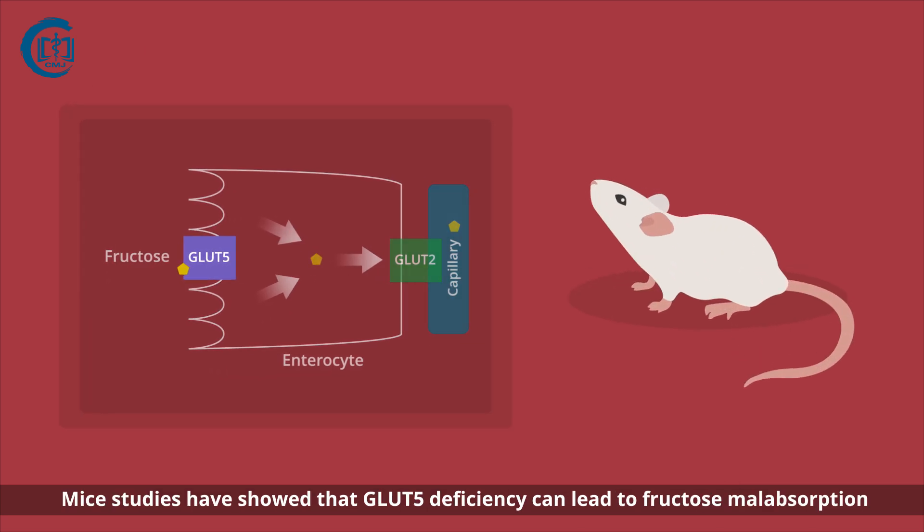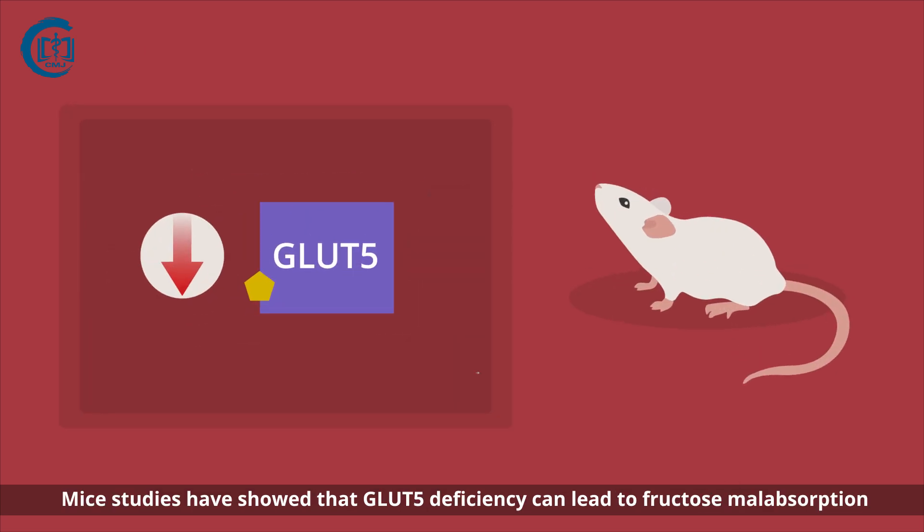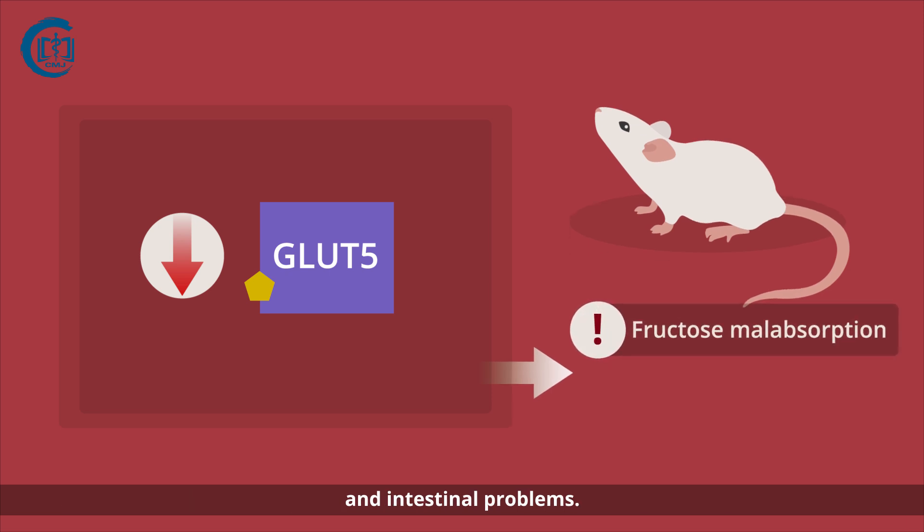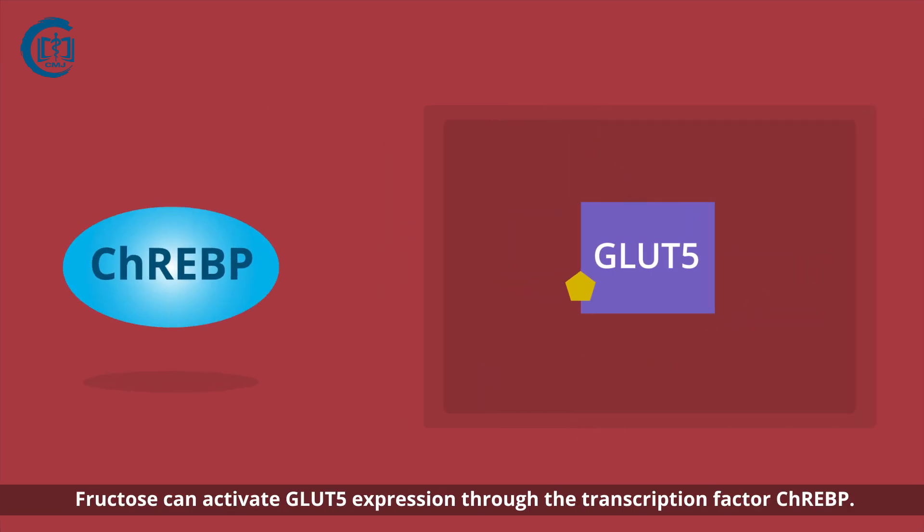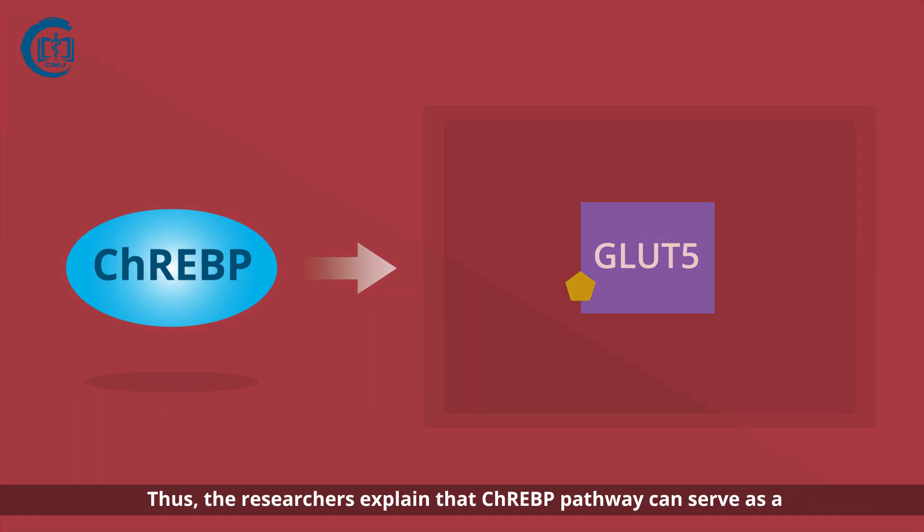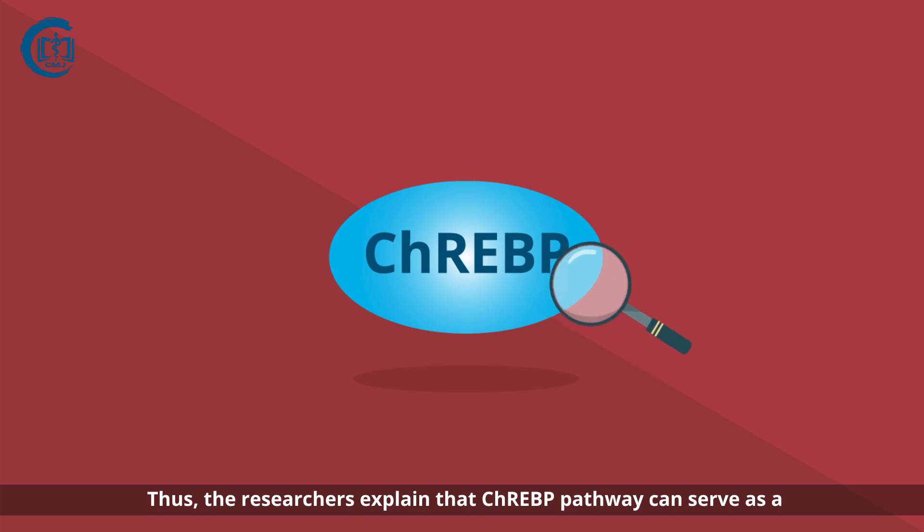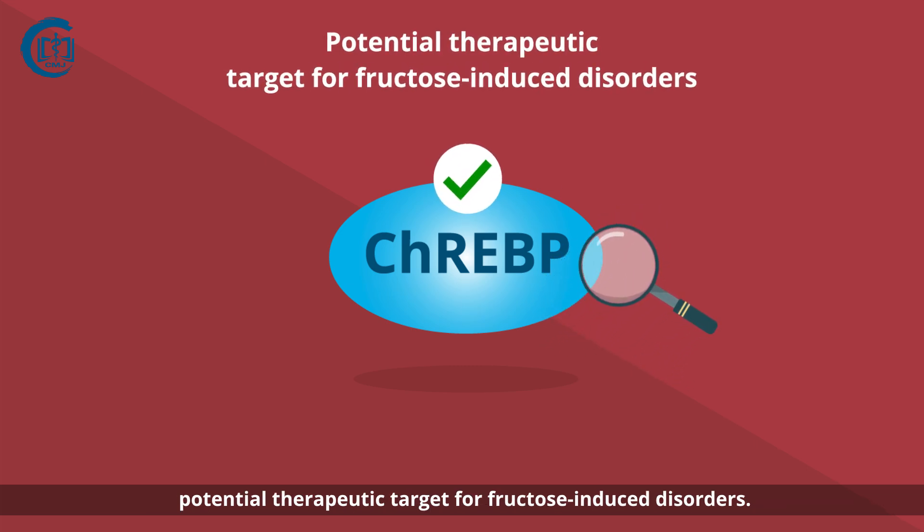Studies have shown that GLUT5 deficiency can lead to fructose malabsorption and intestinal problems. Fructose can activate GLUT5 expression through the transcription factor ChREBP. Thus, the ChREBP pathway can serve as a potential therapeutic target for fructose-induced disorders.